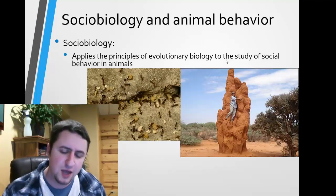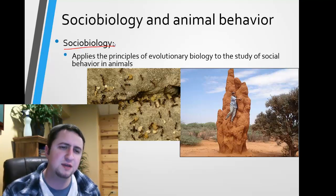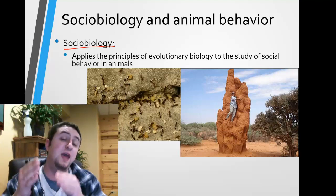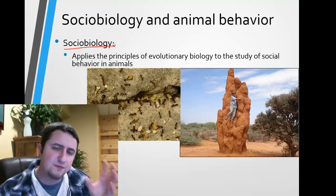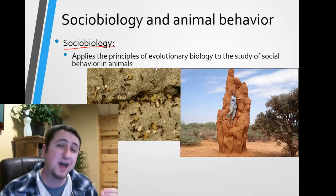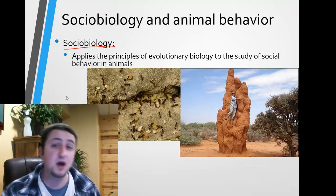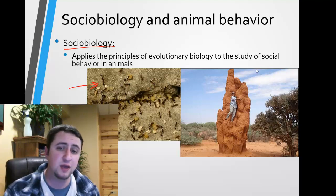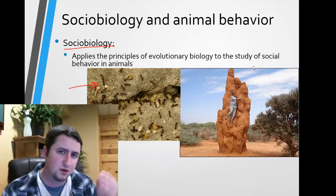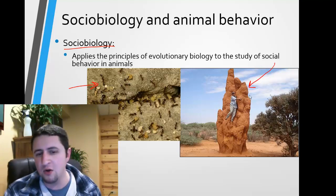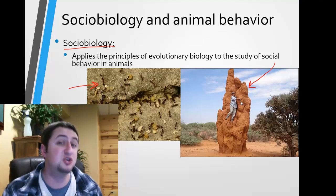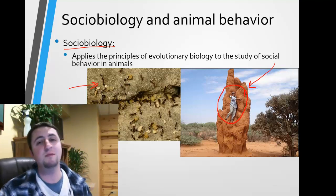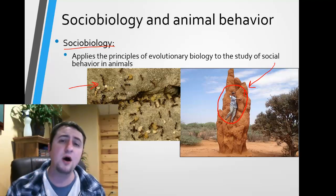Now I'm going to shift gears and talk about sociobiology. Sociobiology is where we take the principles of evolution and apply them to the study of behavior in animals — more specifically, what is the evolutionary benefit of living in a society, of being a social animal. There are some great examples of animals that live in social groups. Ants are a great example; they build awesome societies with ranked individuals that each do certain things. Termites are another — this is actually a termite mound, and it's huge. Some can get very big; you can see a person standing on it to put it in perspective.